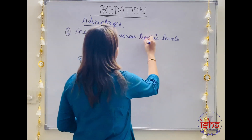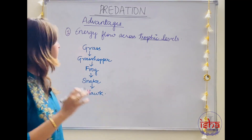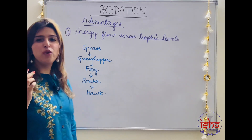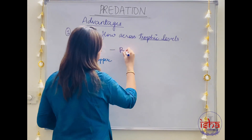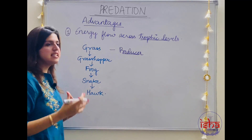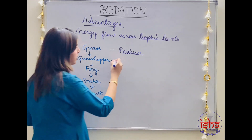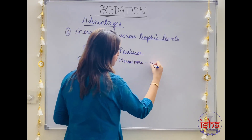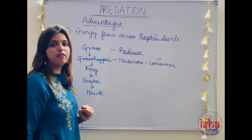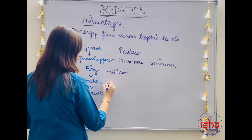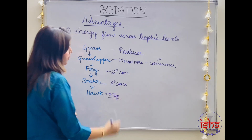Each level at which an organism performs a specific role is called a trophic level. Let's look at a typical food chain example. Here, grass is a producer — it is the one making food from sunlight through photosynthesis; it is the autotroph. It is eaten by a herbivore, which is the primary consumer. The grasshopper is then eaten by the frog — that becomes the secondary consumer. The snake becomes the tertiary consumer, eating the frog. Then comes the top-level consumer — the hawk.